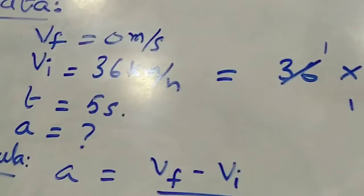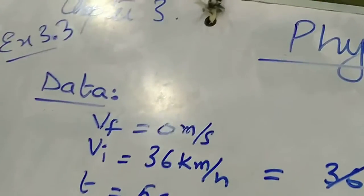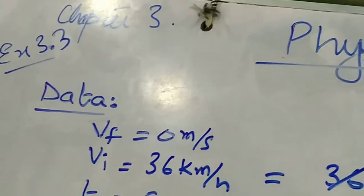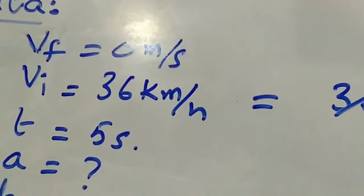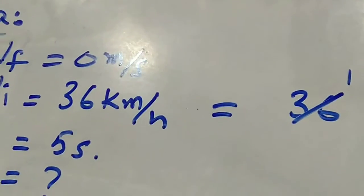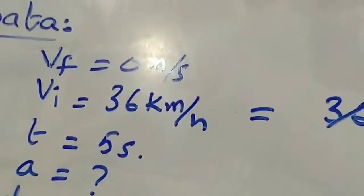Okay, this is exercise 3.3. So let's read the statement. A car moving with a velocity of 36 km an hour is brought to rest in 5 seconds. Calculate its deceleration.